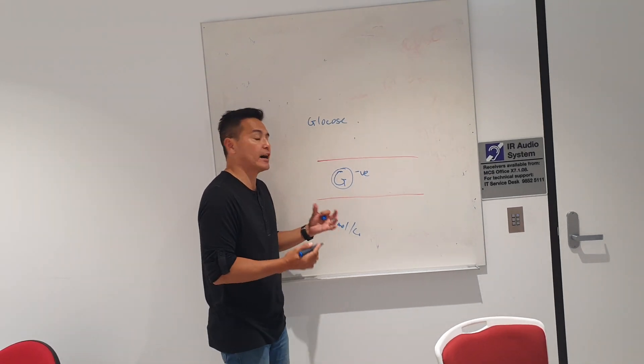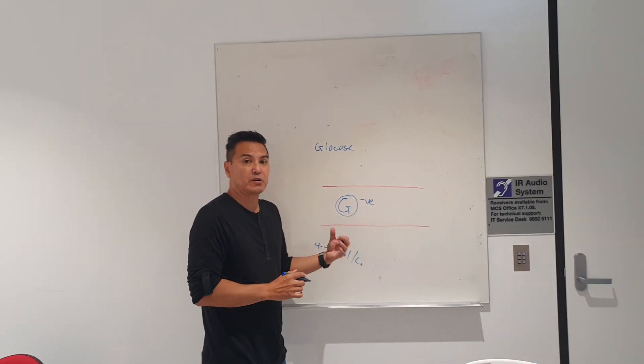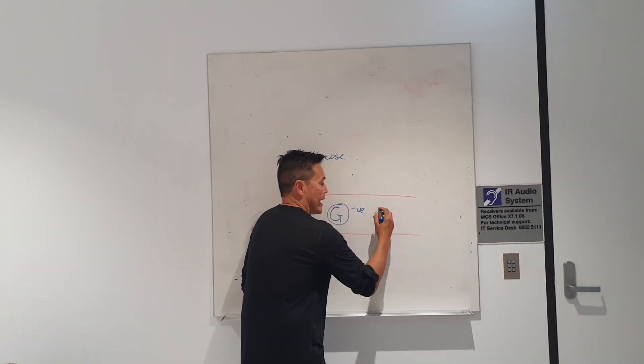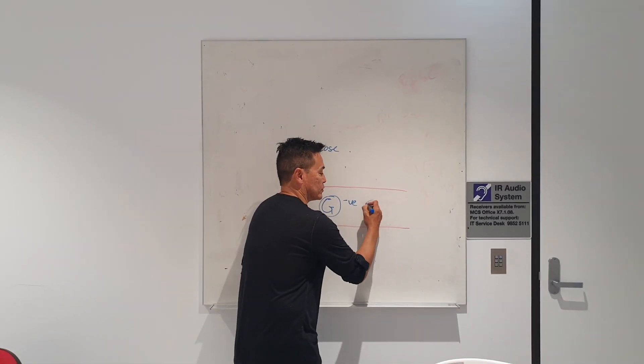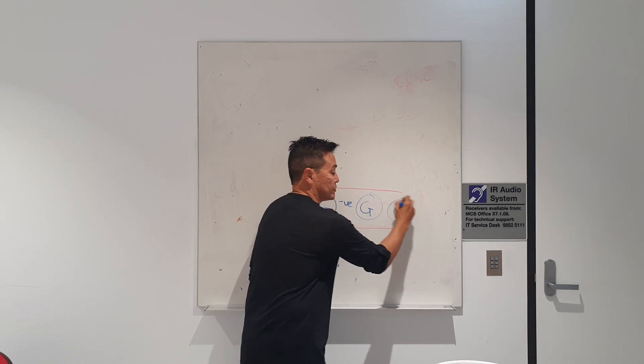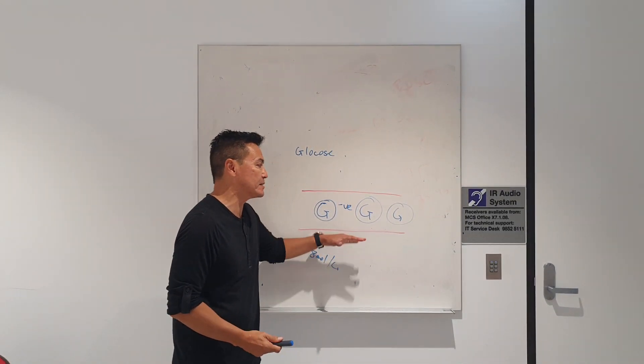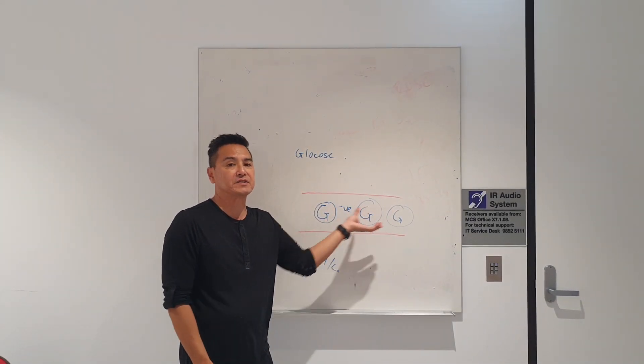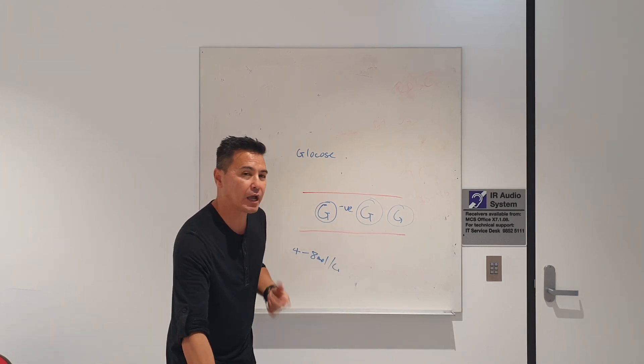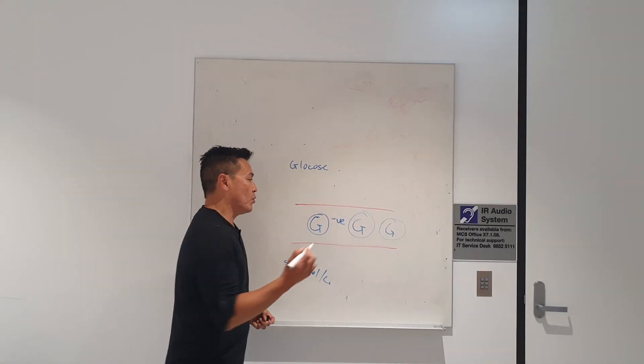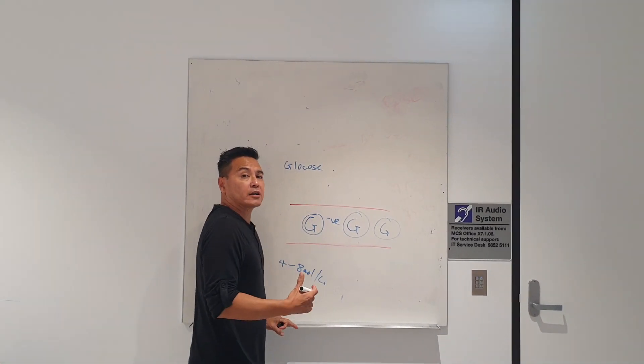The thing about glucose is it's a very strongly negatively charged molecule, very much like the protein molecule. If you have an overabundance of glucose in your bloodstream, you're going to have an overabundance and an imbalance of too much negative stuff in your bloodstream.